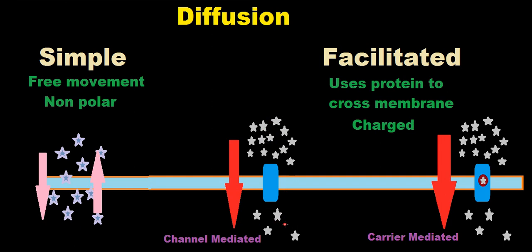This channel-mediated diffusion will automatically happen through this channel, just moving down the concentration gradient, while the carrier-mediated diffusion will actually use a small carrier, such as right here, where this carrier will actually hold on to that ion and bring it through this channel, again, down the concentration gradient.